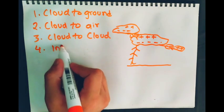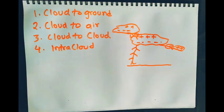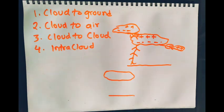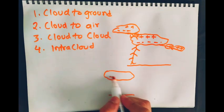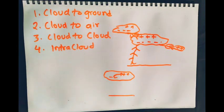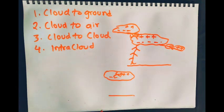Fourth is intracloud. In intracloud lightning we have charges separated within the cloud itself and the discharge can happen within the cloud itself. So there is this fractal structure but it's within the cloud. What we will see is just light because this structure gets blocked by the cloud itself. So we just see light coming from the cloud.